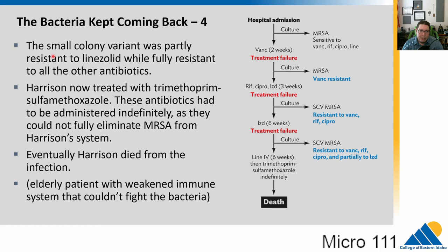These small colonies are all indicative of evolution occurring — not just antibiotic resistance, but the bacteria being stressed in other ways, growing smaller. The small colony variant is partly resistant to linezolid, developing resistance to the last available antibiotic. It is fully resistant to all other antibiotics available to treat it. One last option, trimethoprim, is tried, but antibiotics just have to be given constantly. Unfortunately, it is never able to fully eliminate MRSA from his system, and he eventually dies of the infection.